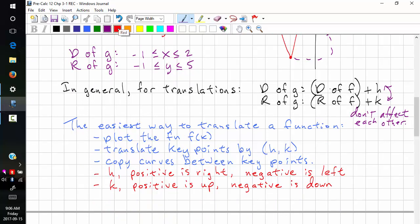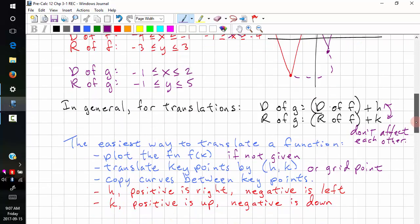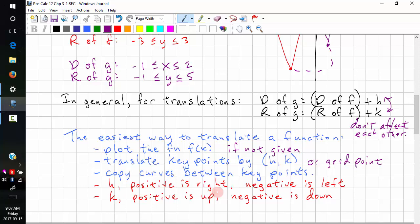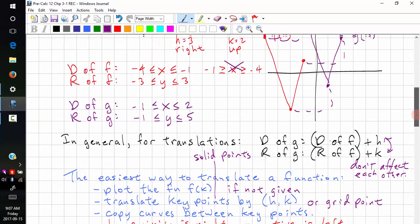The easiest way to translate a function is to plot the original function, if not given. We can translate the key points or grid points. Copy the curves between the key points. So what we did was copy this line. And h is positive to the right, negative is to the left, k is positive up, and negative down. And just a reminder, the key points are the solid points on your graph. These are the key points.